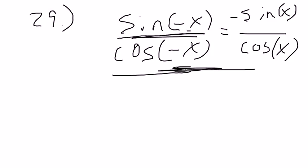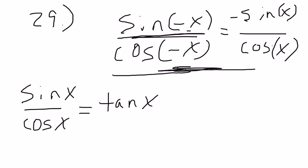Now sine over cosine is also on page 372. Sine over cosine is tangent, and it's in the quotient identities.